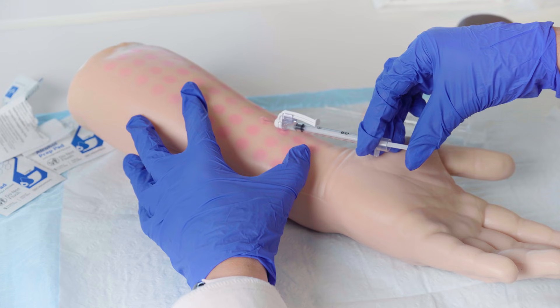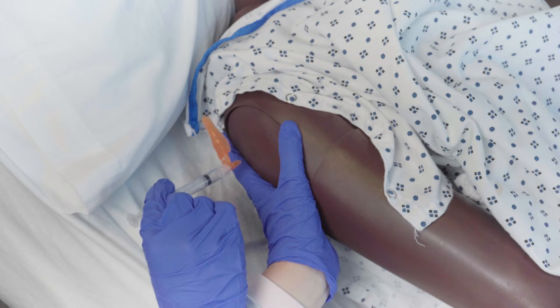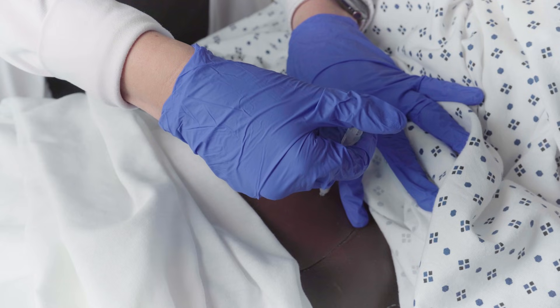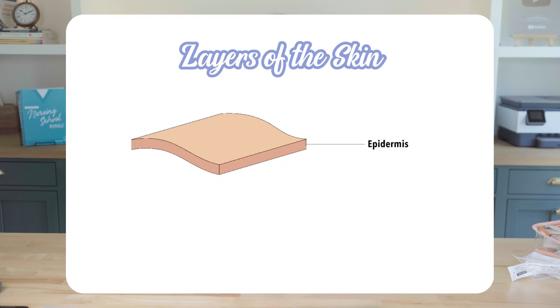Let's walk through the different injection angles, what they're used for, and their sites of administration. First let's walk through the layers of the skin. First we have the epidermis. This is the thin outermost layer of the skin. It provides a waterproof barrier and creates our skin tone.